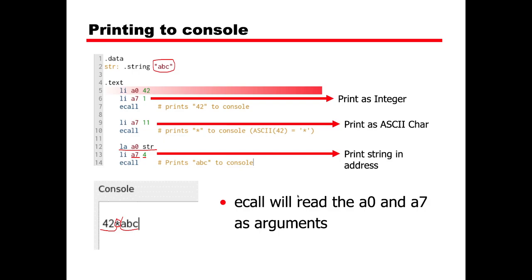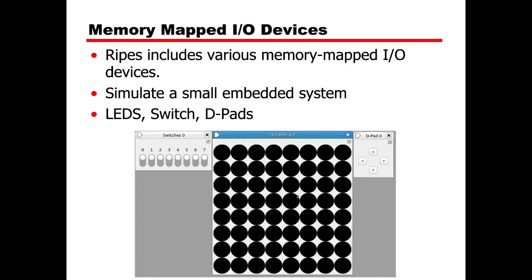The A0 and A7 arguments differ from a real operating system, but in RIPES these are the supported arguments for experimentation. Now we move to the memory map I/O devices. RIPES includes various devices that allow us to simulate a small embedded system, including LEDs, switches, and D-pads.